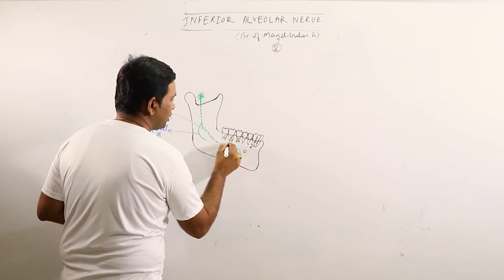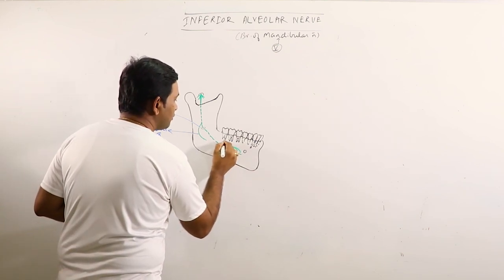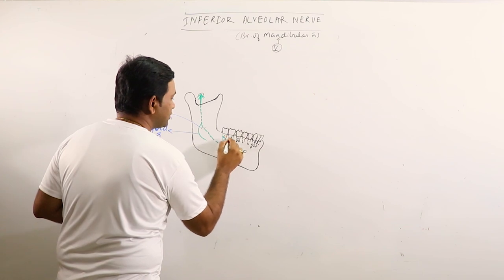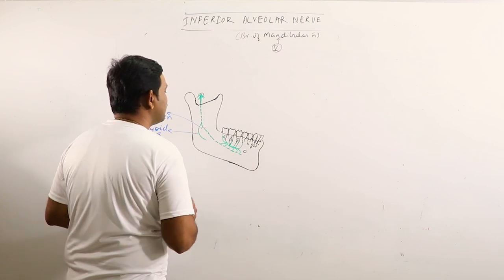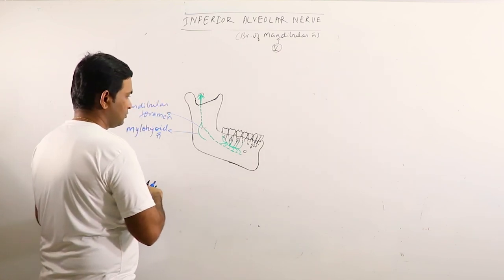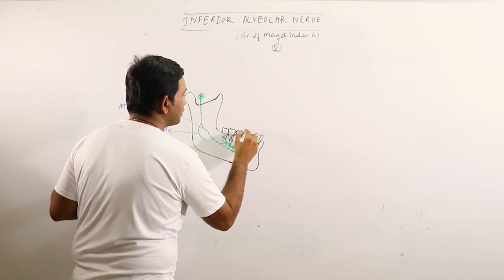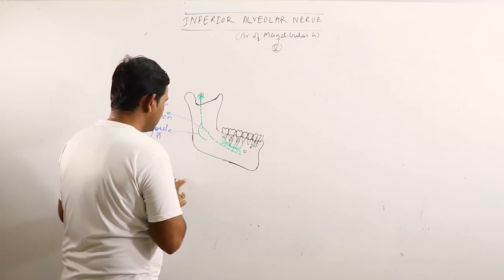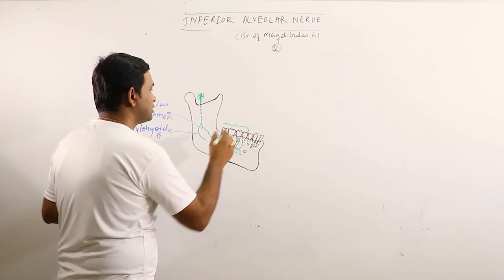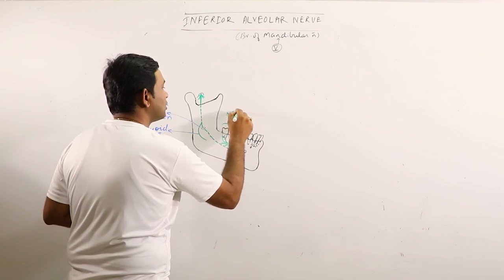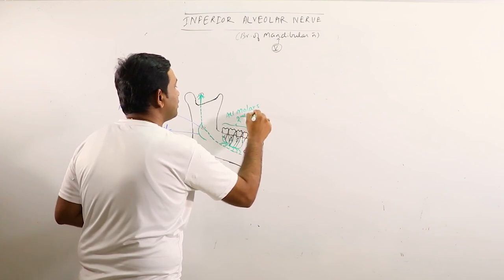These sensory branches form a plexus that is the inferior dental plexus which gives branches to supply the molars and the first premolar. So, the inferior dental plexus supplies all molars and second premolar.